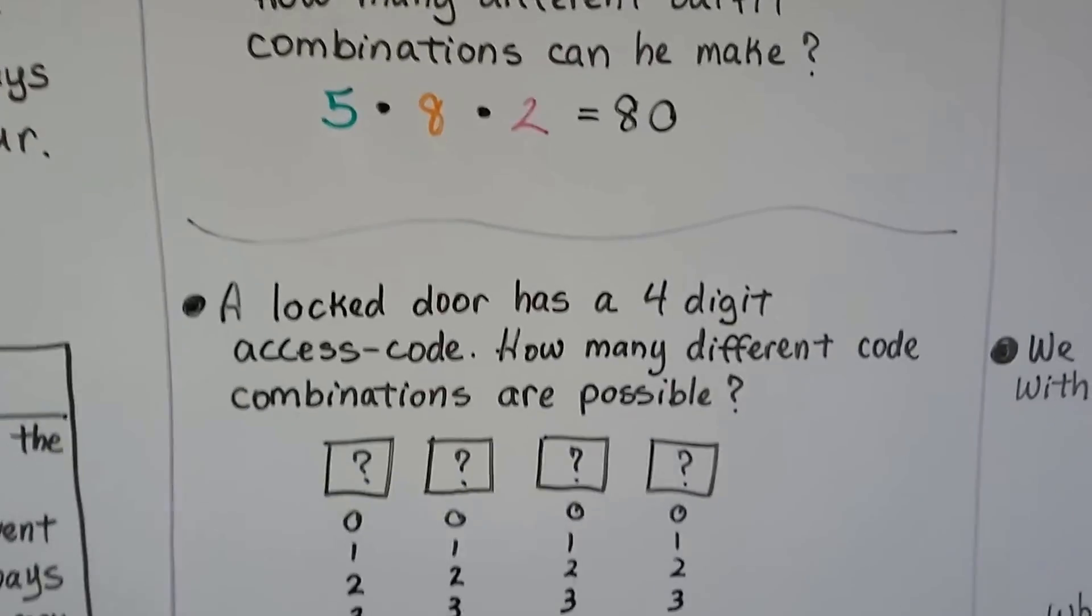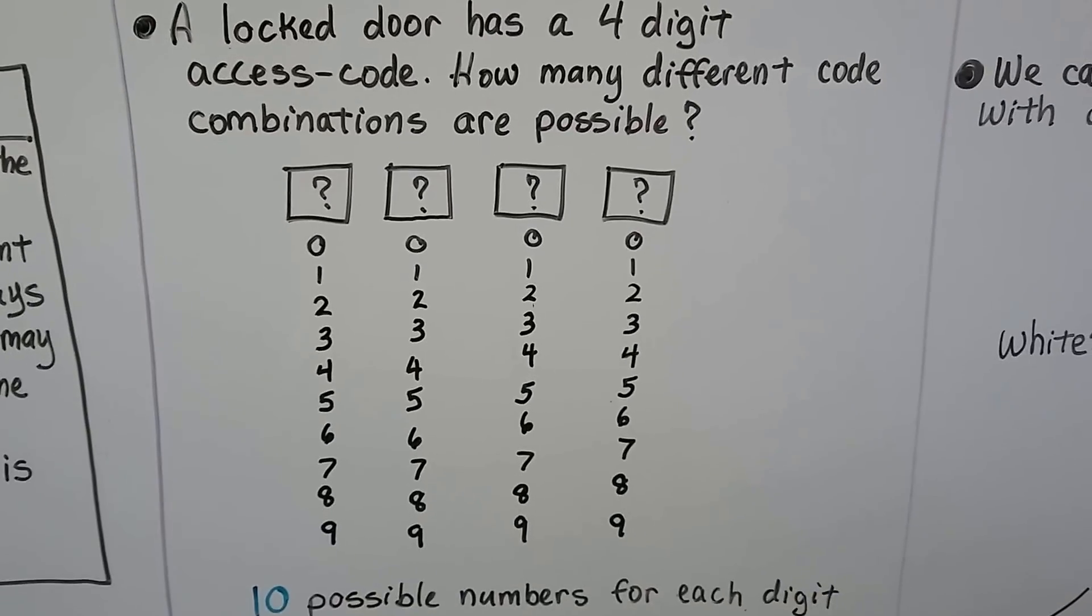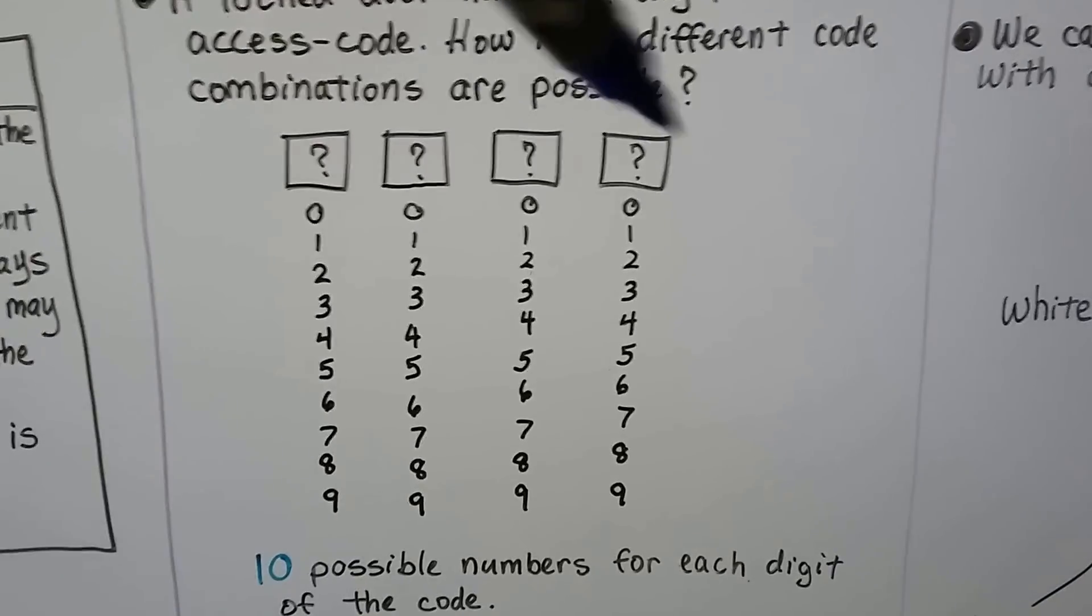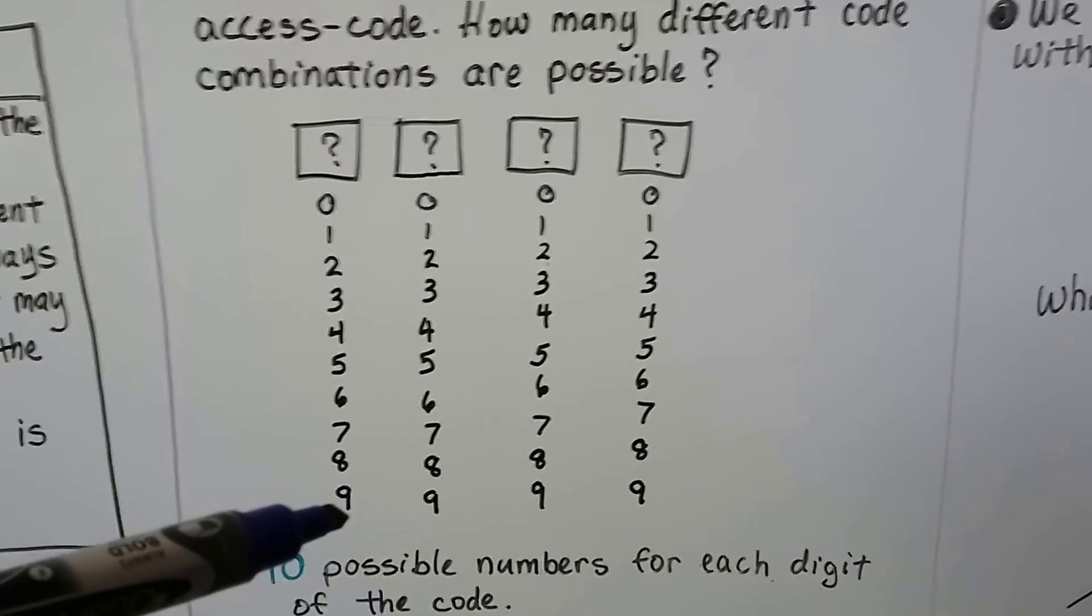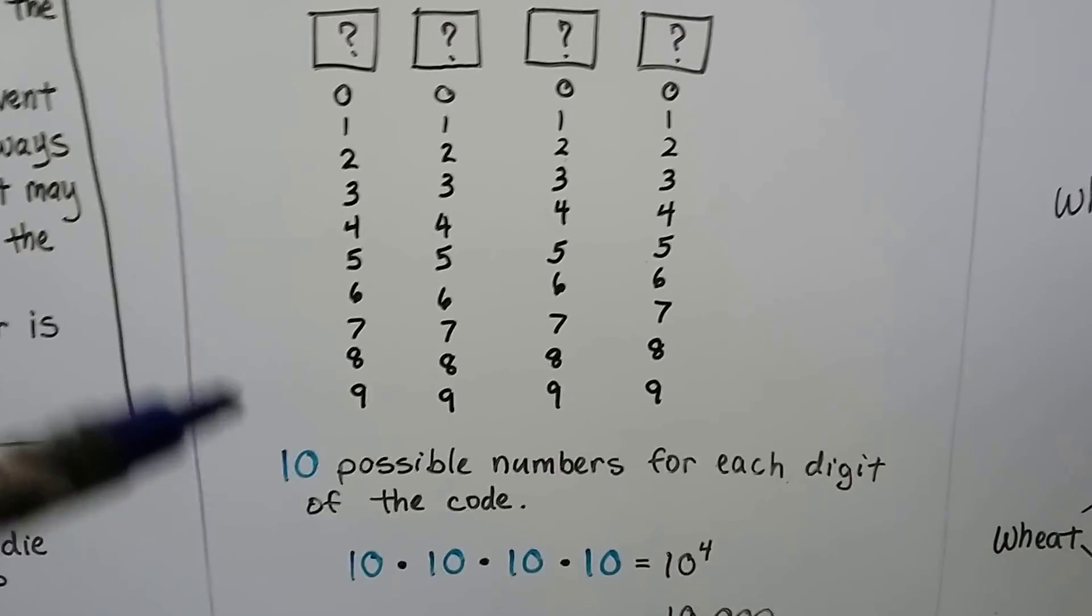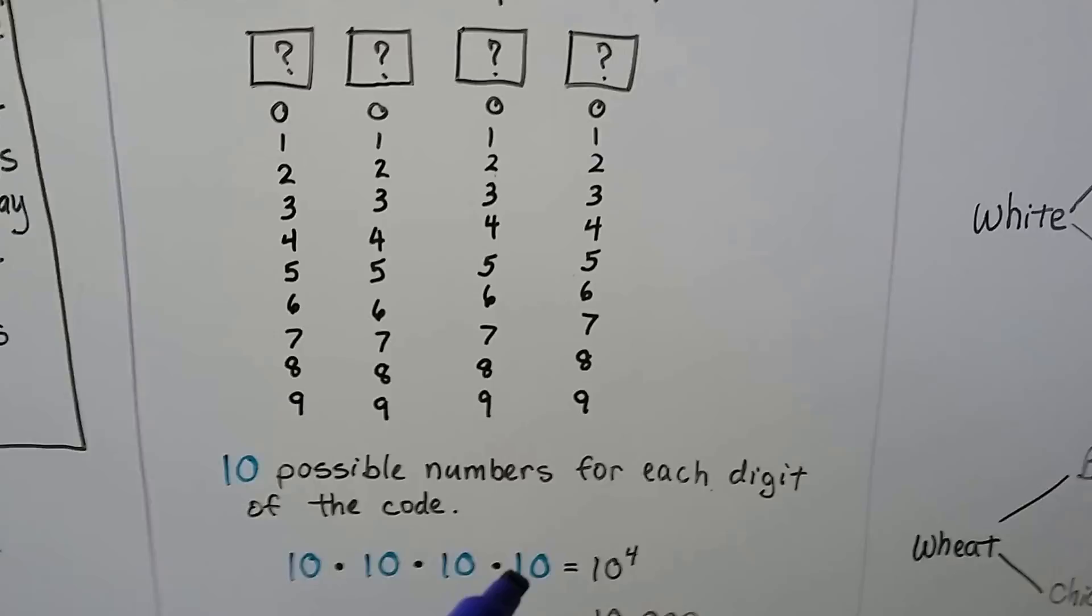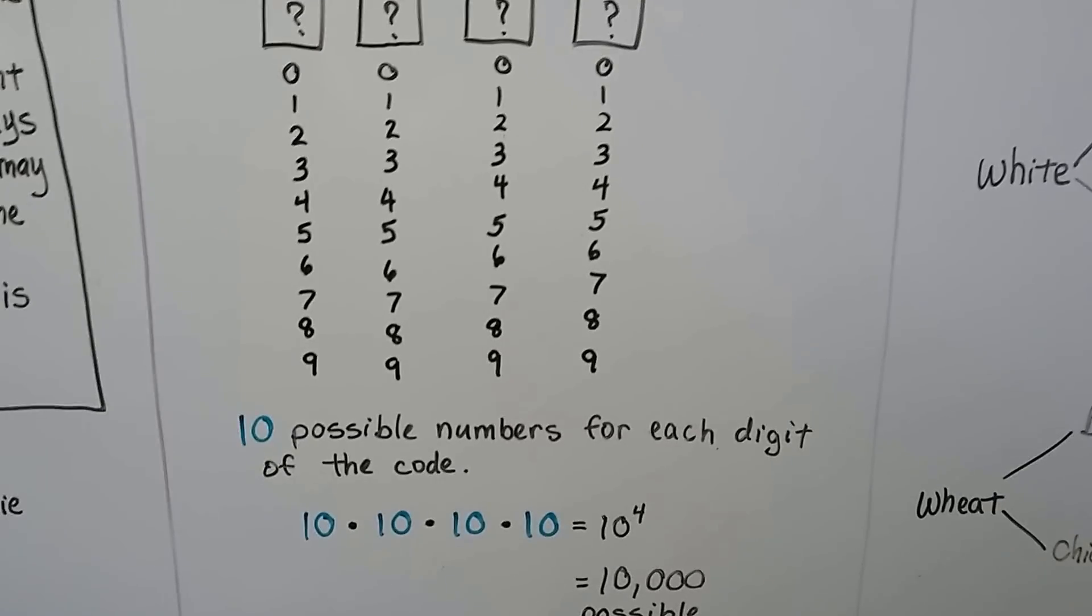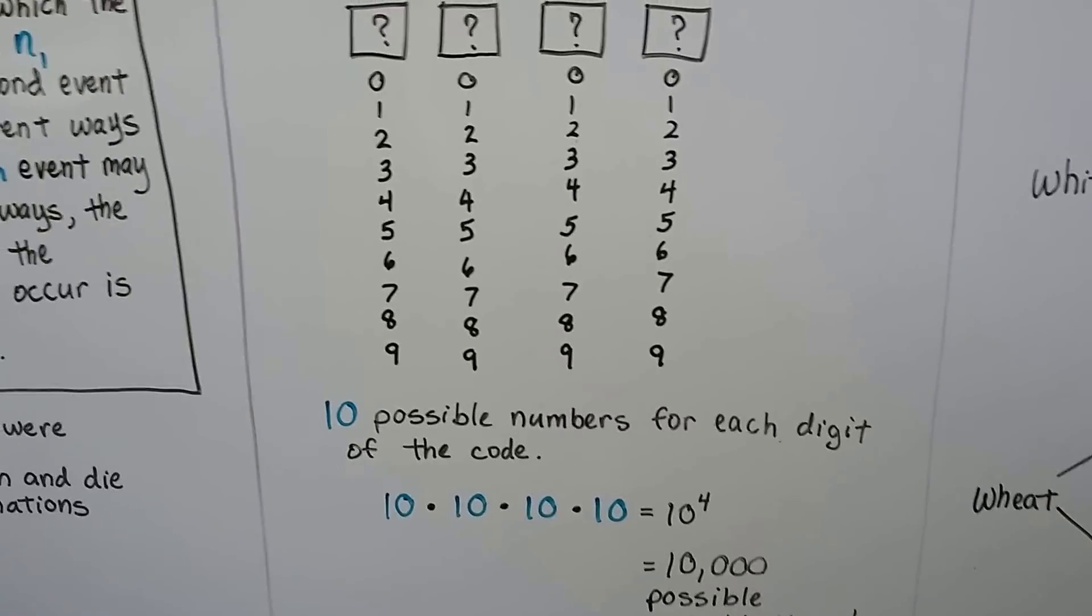A locked door has a 4-digit axis code. How many different code combinations are possible? So here's the 4 different codes, and each one can be 0 through 9, which is 10 for each one. And there's 10 possible numbers for each digit of the code. We do 10 times 10 times 10 times 10, which is 10 to the 4th power. That means there's 10,000 possible combinations for that 4-digit axis code.